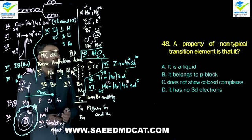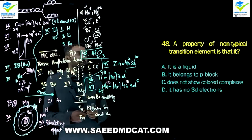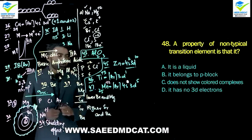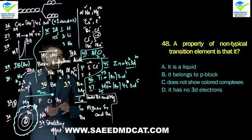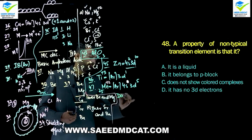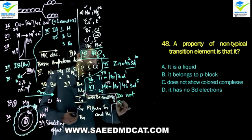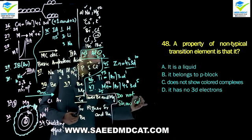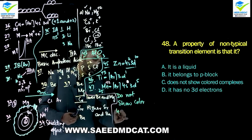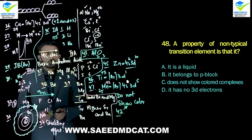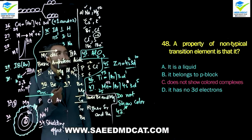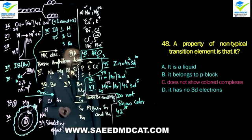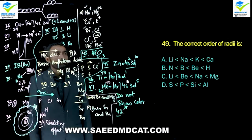Question 48: A property of non-typical transition metal elements is that they do not show color. Typical transition elements show color, but non-typical transition elements do not show color. Alpha and beta options are irrelevant; charlie option is most relevant and correct: non-typical transition elements do not show color.